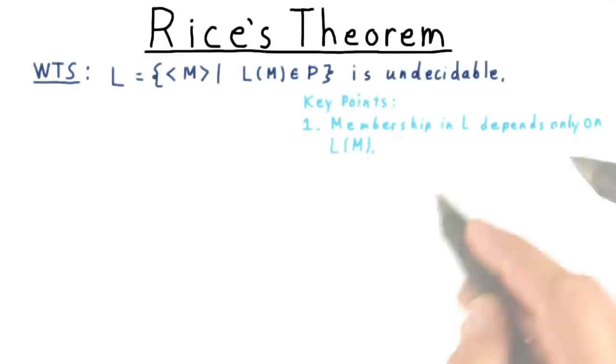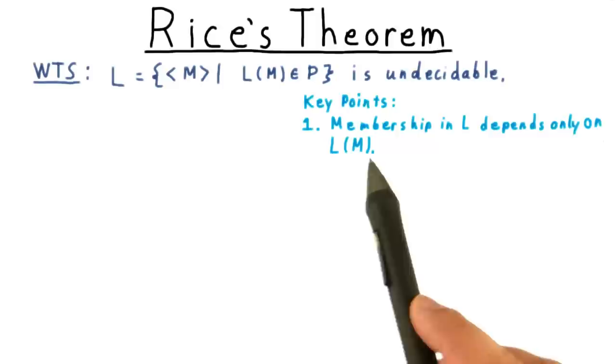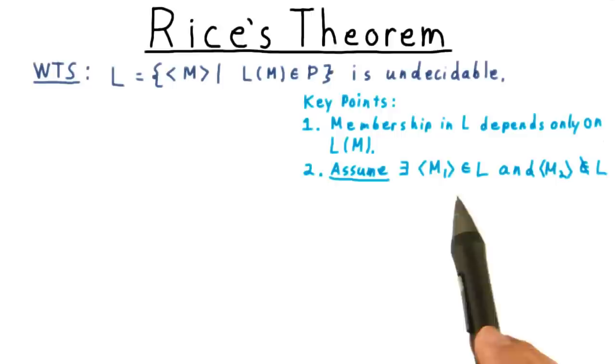Two things have to be true about this language. First, as we've said, that the membership can only depend on the language of the machine, not about its particular implementation, like the number of states, or the tape alphabet, and so forth. Second, is that the language can't be trivial, either including or excluding every Turing machine.